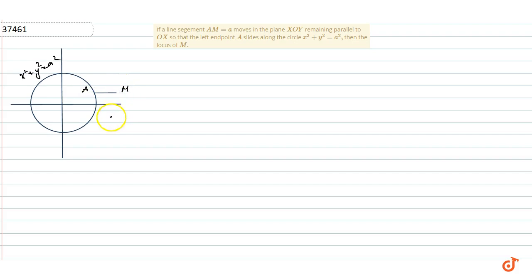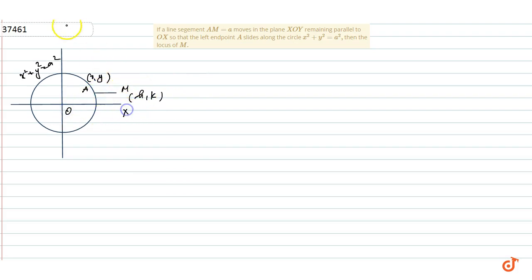Let us assume that A has coordinates (x, y) and M has coordinates (h, k). Since the origin is O with axes X and Y, and AM is always parallel to the x-axis, the h-coordinate of M will be equal to x plus a.